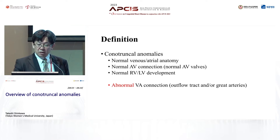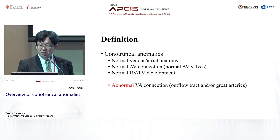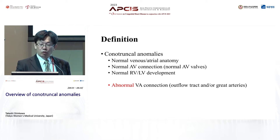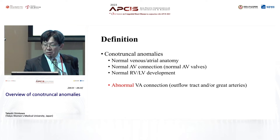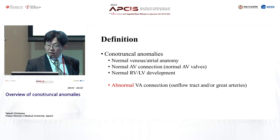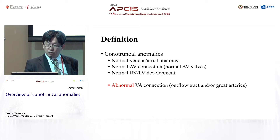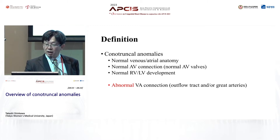Therefore, conotruncal anomalies are congenital heart disease with normal, or almost normal, venous and atrial anatomy, normal atrioventricular connection including normal AV valves — tricuspid and mitral valves — and normal RV and LV body development, as well as abnormal VA connections, which include outflow tract and great arteries.